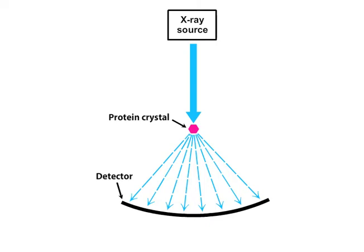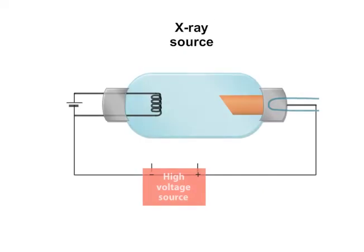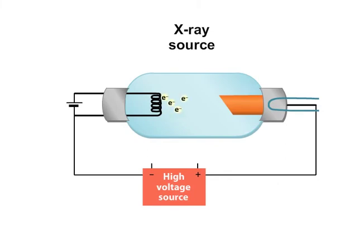There are several different types of X-ray sources. One commonly used method for generating X-rays is to accelerate electrons against a copper target using a high voltage potential. This method generates a beam of X-rays with a wavelength of 1.54 angstroms.